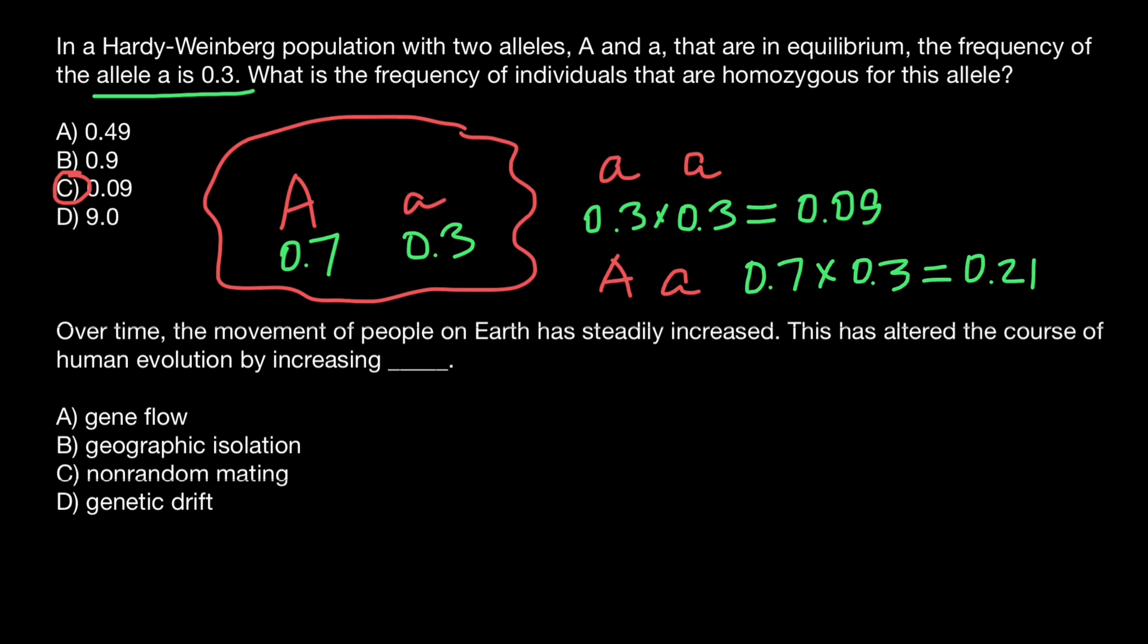Actually, there are two variants possible. The first allele can be dominant and second recessive, but we can also get a heterozygous genotype when the first allele is recessive and second is dominant. So two variants, both heterozygous. So we have to multiply our answer by two. In this case, the frequency of the heterozygous genotype is going to be 0.42.